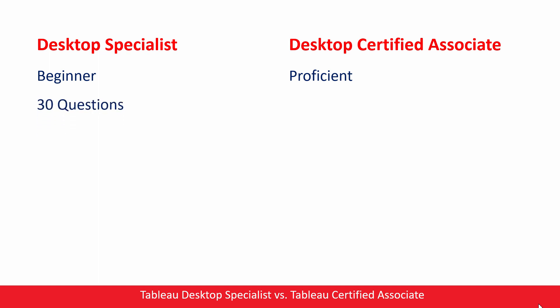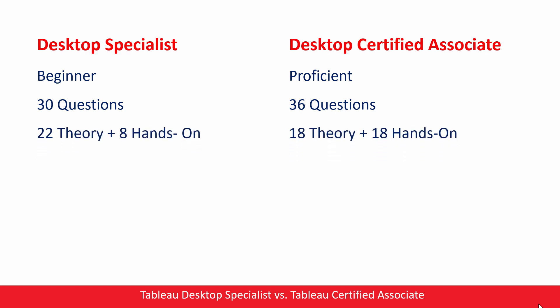The second difference is questions. The Specialist exam measures basic knowledge, so there are more theoretical questions. You will have 30 questions in total and approximately 22 of them will be theoretical. You will have 8 hands-on questions and they will be pretty straightforward. However, in the Certified Associate exam, you will have more hands-on questions and they are definitely not straightforward. You will get 36 questions and approximately half will be hands-on.